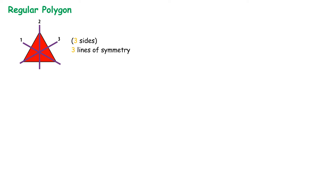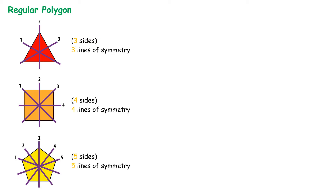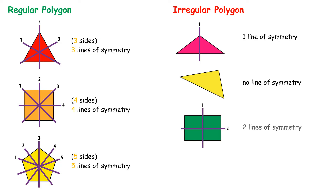Regular Polygon examples: An equilateral triangle has 3 sides and 3 lines of symmetry. A square has 4 sides and 4 lines of symmetry. A regular pentagon has 5 sides and 5 lines of symmetry. Irregular Polygon examples: An isosceles triangle has 1 line of symmetry. A scalene triangle has no line of symmetry. A rectangle has 2 lines of symmetry. An irregular quadrilateral has no line of symmetry.